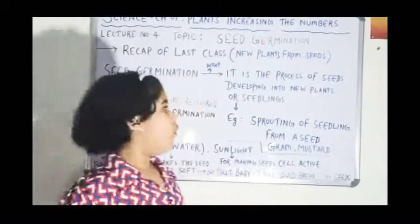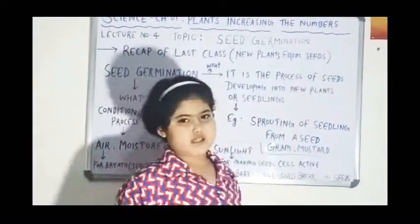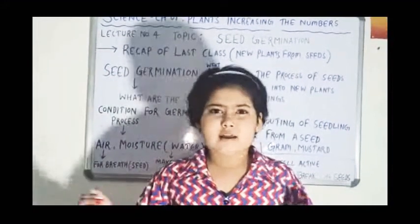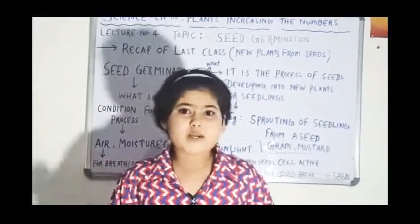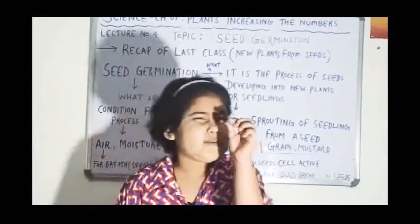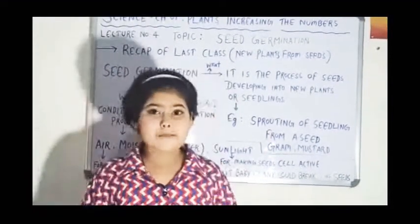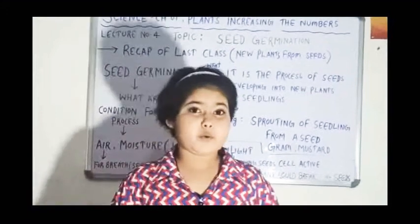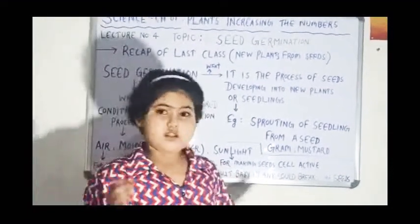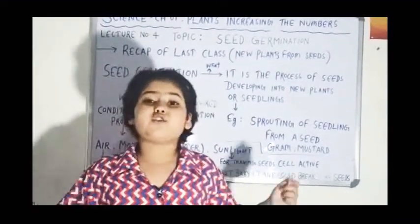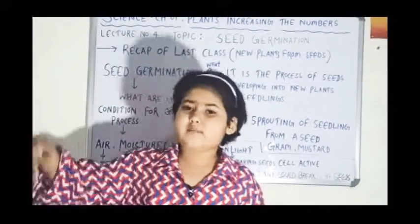In our previous lecture, we learned that new plants grow from seeds. A baby plant is known as a seedling because it is very tiny. Not all plants grow properly, and the reasons are that small baby plants and some seeds are destroyed due to heavy rain and strong winds — the wind and heavy rain blow them away and destroy them.